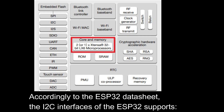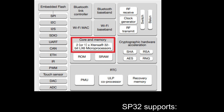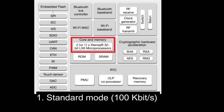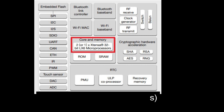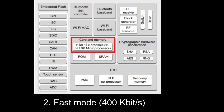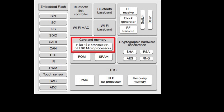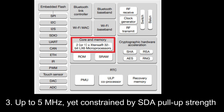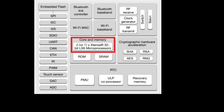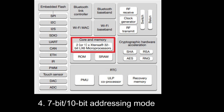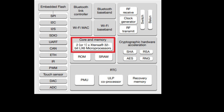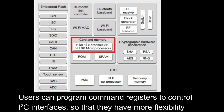According to the ESP32 datasheet, the I2C interfaces of the ESP32 support: 1. Standard mode at 100 kbit/s; 2. Fast mode at 400 kbit/s; 3. Up to 5 MHz, yet constrained by SDA pull-up strength; 4. 7-bit/10-bit addressing mode; 5. Dual addressing mode. Users can program command registers to control I2C interfaces for more flexibility.